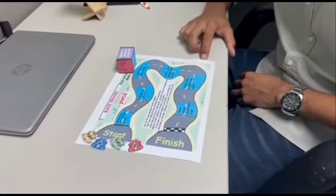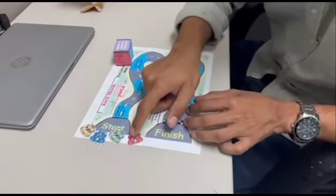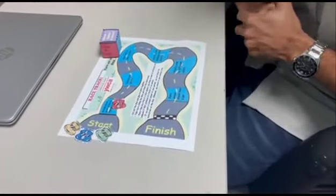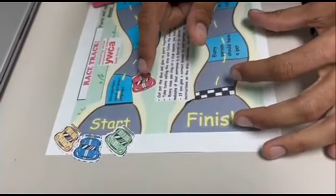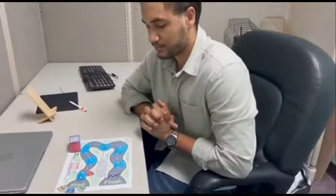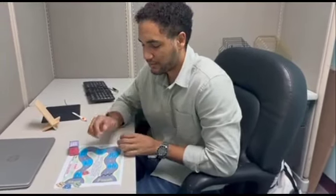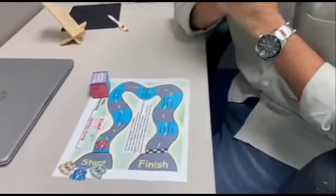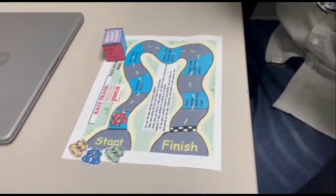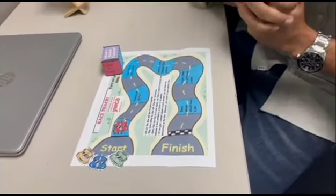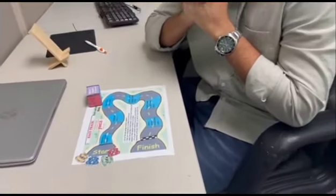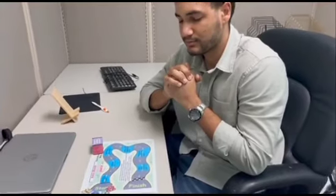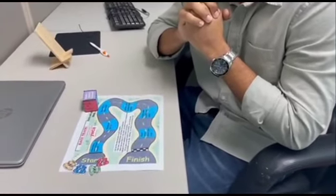Let's say you get one, so you move one space. When you reach the blue squares, you read each sentence. For example, 'Grandmothers speak different languages.' Is that a fact or an opinion? That's an opinion — very well done! So you stay there and don't have to go back. But if you give a wrong answer, then you return to the previous stage. The next person continues until they reach the finish.